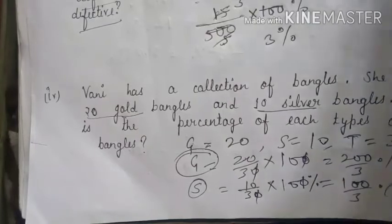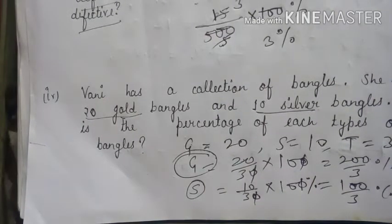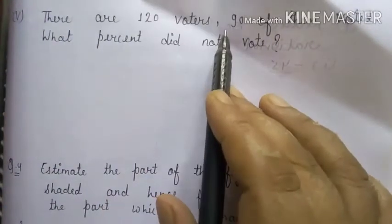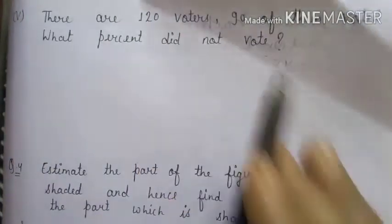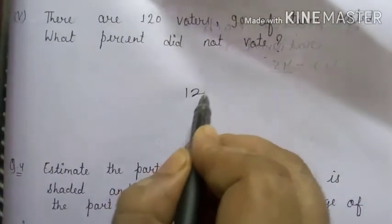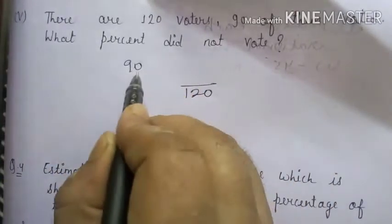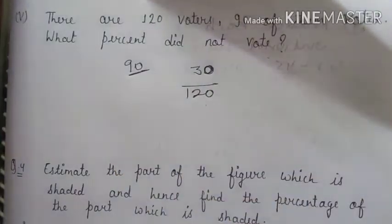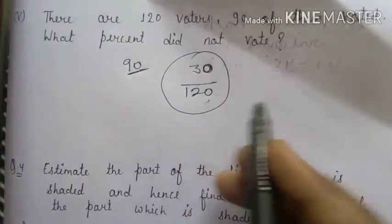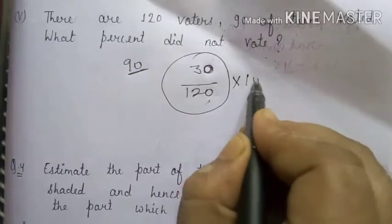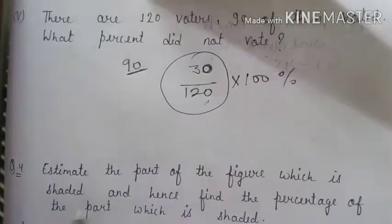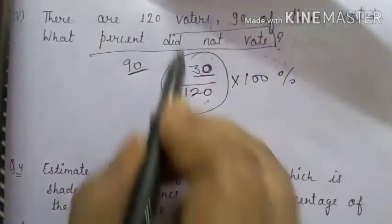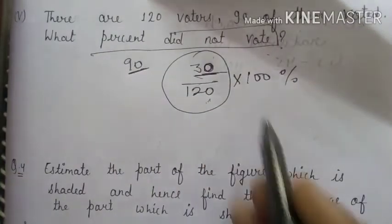Fifth part: There are 120 voters, 90 of them voted. What percent did not vote? Total voters = 120, voted = 90, so did not vote = 30. To find the percentage who did not vote, write 30 upon 120, then multiply by 100 percent.